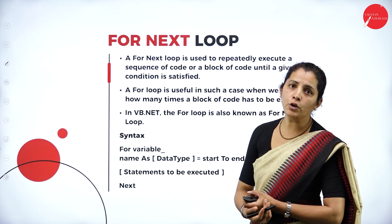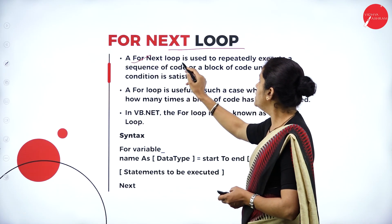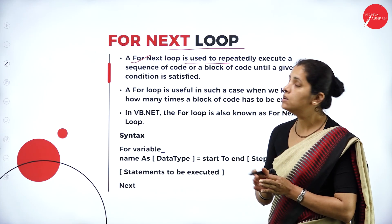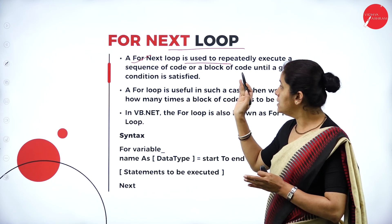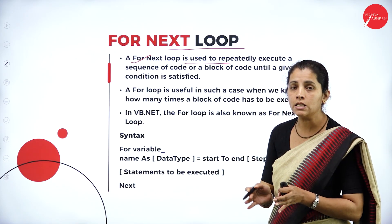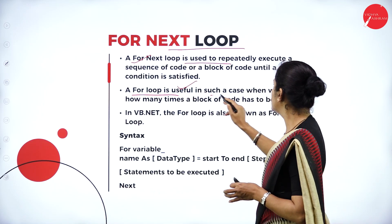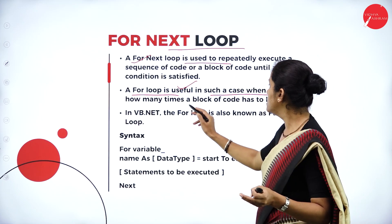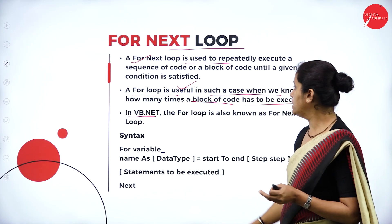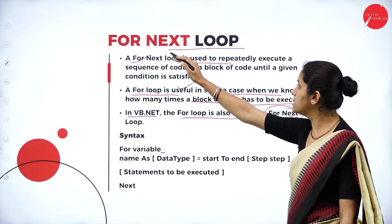Now I am going to have the for next loop, which is similar to the for loop. When I want to repeat a statement and I know how many times I want to repeat it in advance, I will go with for next. A for loop is useful when we know how many times a block of code has to be executed in advance. In VB.NET, the for loop is also known as the for next loop.